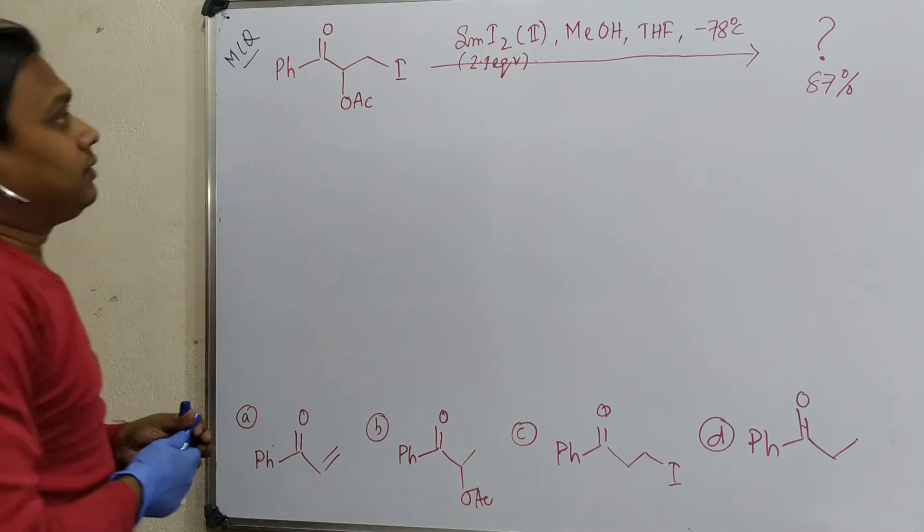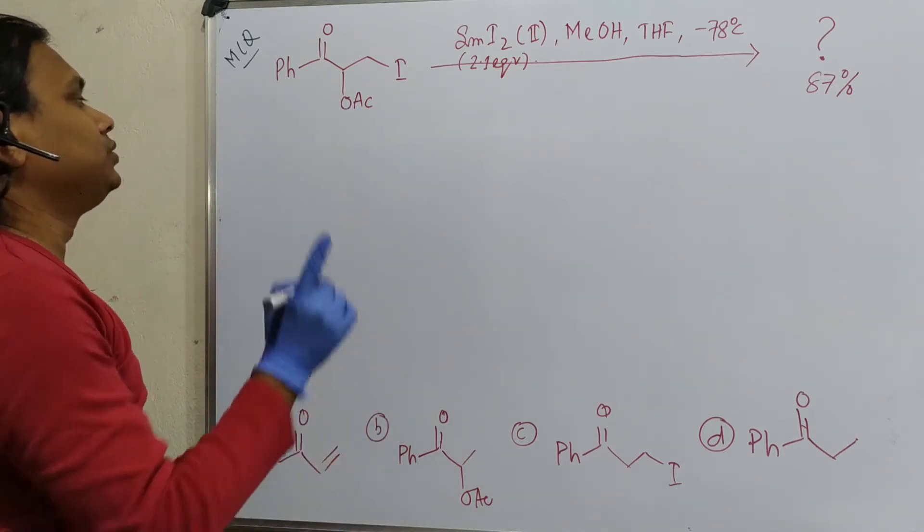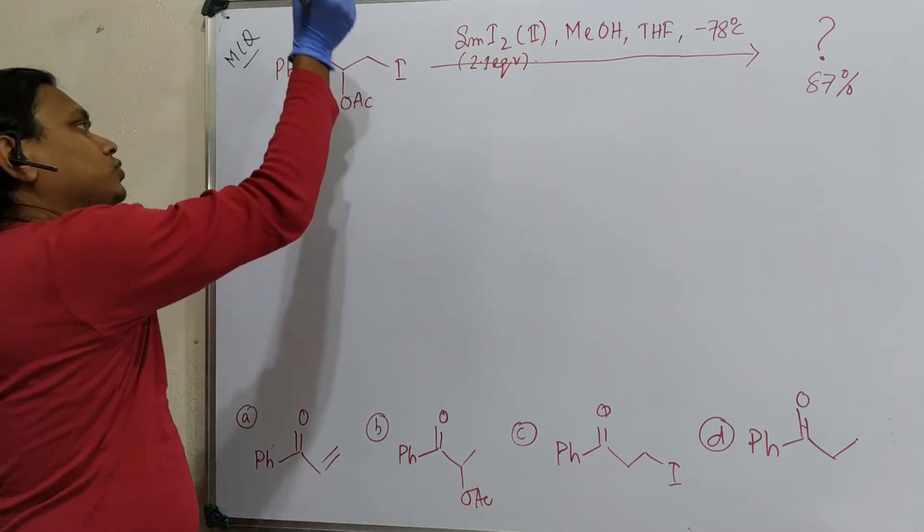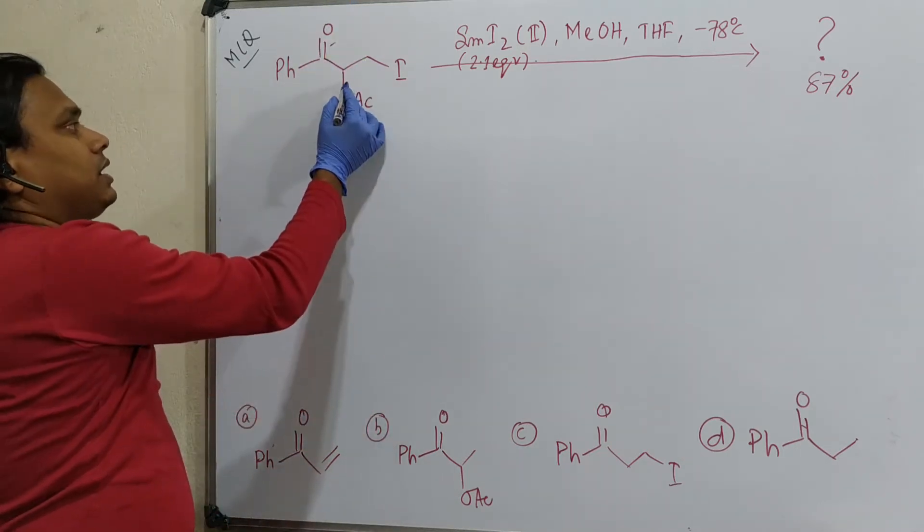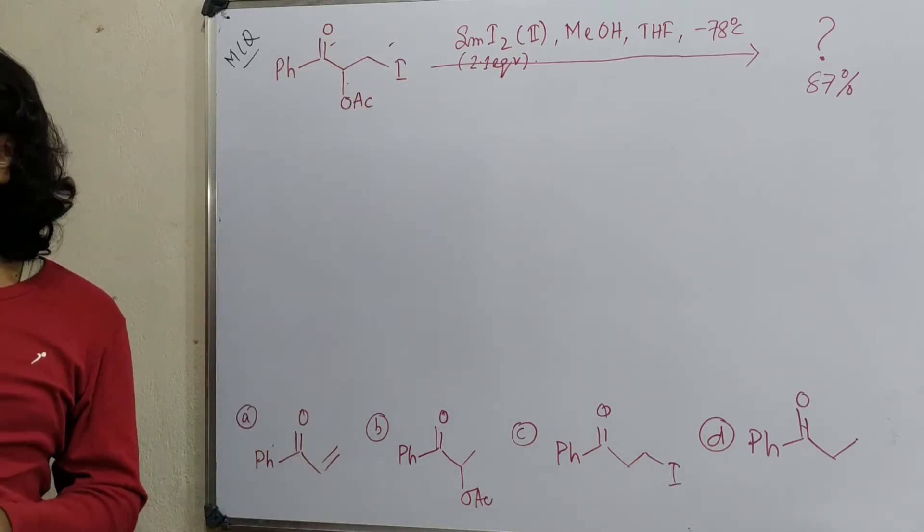So let's do it. Just look at the molecule and reagent. In this molecule, three types of functional groups: ketone, OAc and C-I. Three types of functional groups are present in this molecule.